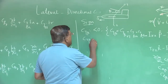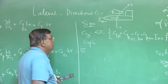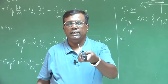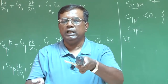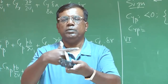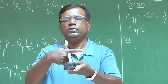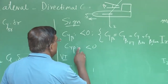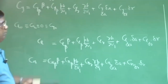Now Cy_p: if the vertical tail contribution is considered, for positive p (right wing going down), the fin experiences a force in the negative y direction. So Cy_p because of the vertical tail is less than zero. However, with wing sweep, it may change the sign.